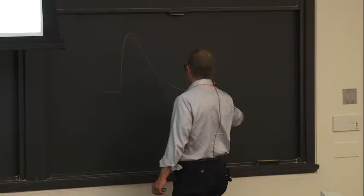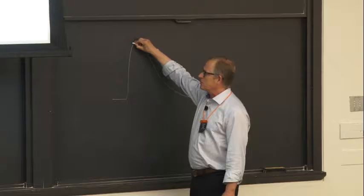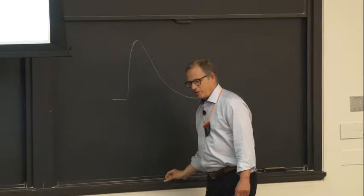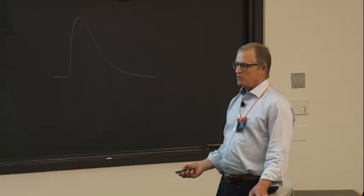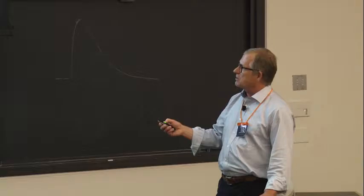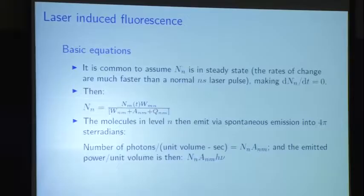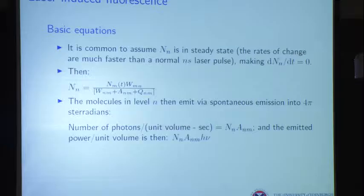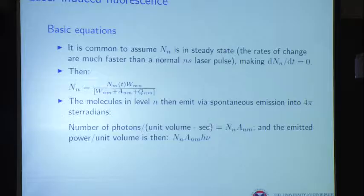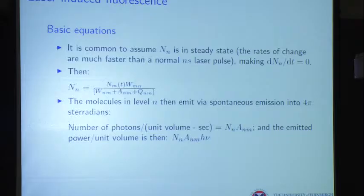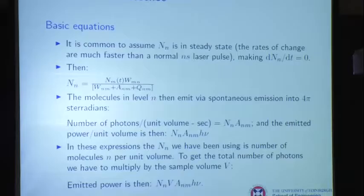It's common to assume that the upper state is in steady state. Why? Because a YAG-pumped dye laser pulse comes up quickly, and the argument is that the state-to-state transitions are so fast they will just keep up with the pulse. At any one point in the pulse, we assume everything is at steady state. Then you can say that the excited state population is given by that expression — the rate at which we populate it, which is the absorption rate, divided by the loss rate. Those molecules, once pumped up there, emit into 4π steradians.